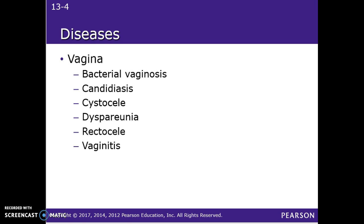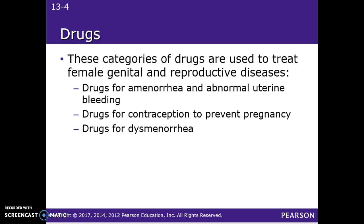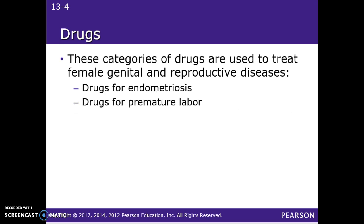From there, you'll look at laboratory and diagnostic procedures. Probably the most common one is a pap smear — there have been changes in how often it's recommended depending on past results. The BRCA1 or BRCA2 gene refers to the breast cancer gene, which is very interesting if you don't know about it. You'll also cover infertility issues, issues through pregnancy, and then medications — including drugs for contraception, abnormal bleeding, premature labor, and more.